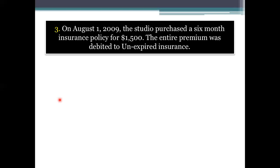Every month the insurance policy will expire, and each month we have to record it. Since the insurance policy was $1,500 for 6 months, if we divide $1,500 by 6, we get $250. It means that every month the insurance expense is $250.